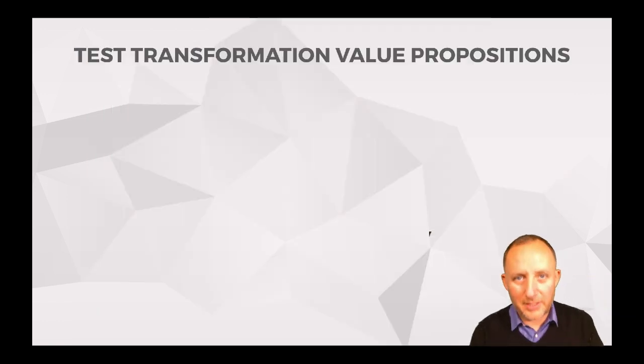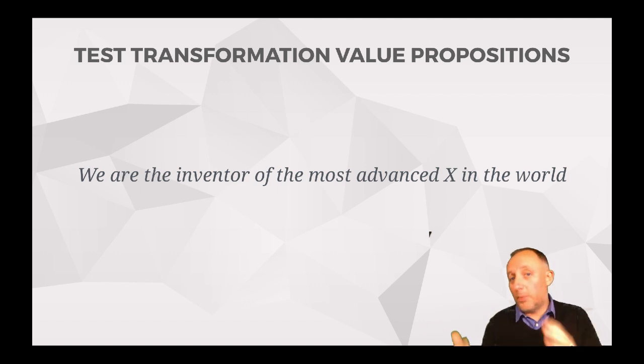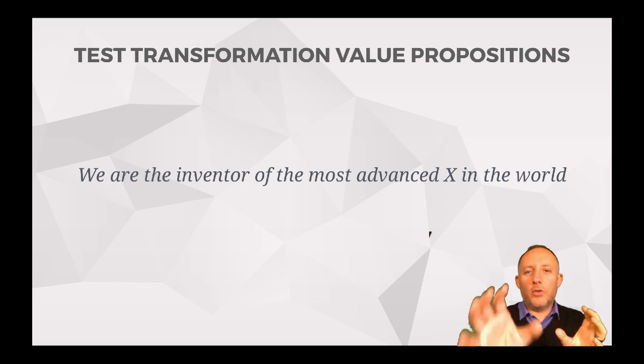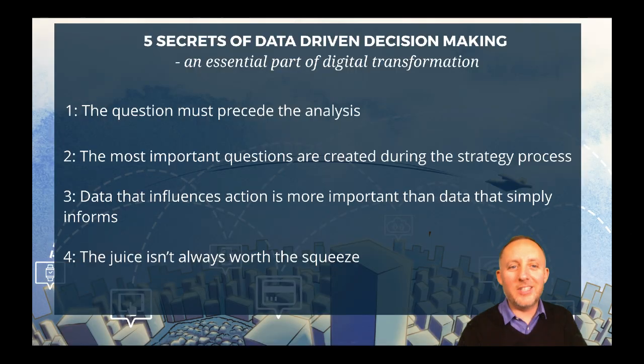We would test transformation value propositions. So all of a sudden we were doing X, now we're going to be doing Y. We are the inventor of the most advanced whatever service product in the world. Test that like Jamie tested his and you will see if you try two or three of these you get a 1%, a 5% and 10% conversion difference and you don't need large traffic volumes for those and they massively increase the perpetuation of transformation within an organization.